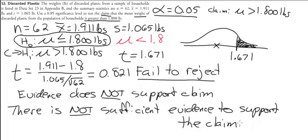Those two examples highlight the basic principles of hypothesis testing. It's about identifying whether the claim is the null or the alternative, then determining if you're doing a z, t, or chi-square test, drawing a picture, figuring out if it's one-tailed or two-tailed, finding the critical value from tables or technology, calculating your test statistic, and comparing them. Once you get the mechanics down, you can move on to using technology and p-values.